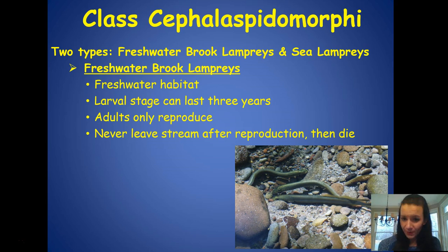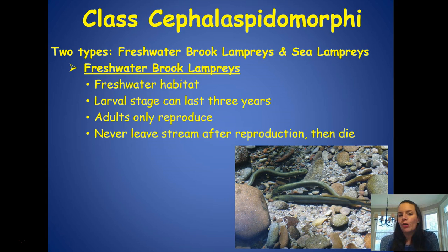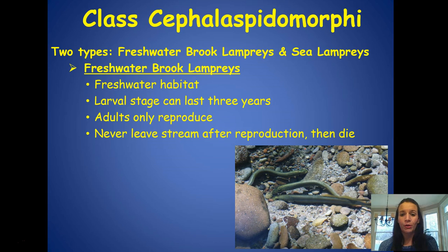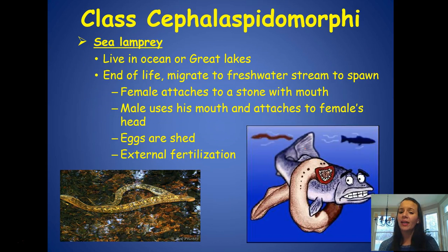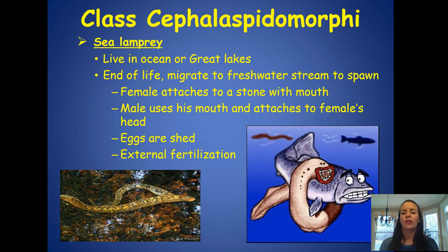There are two types in this class: freshwater brook lampreys and sea lampreys. Freshwater brook lampreys live in freshwater; their larval stage can last three years, and adults never leave the stream after reproduction — they die there. Sea lampreys live in the ocean or the Great Lakes, having entered the Great Lakes partly via ships, where they are causing ecological trouble. At the end of their life, they migrate to a freshwater stream.